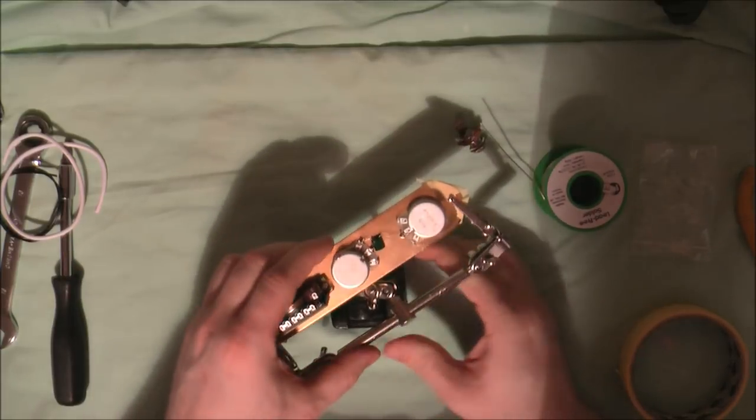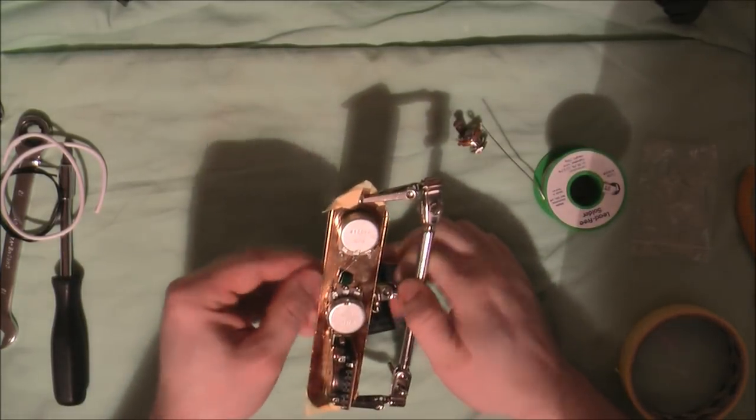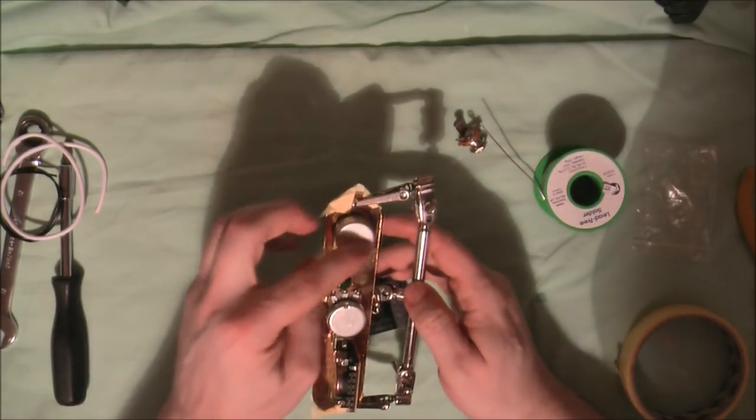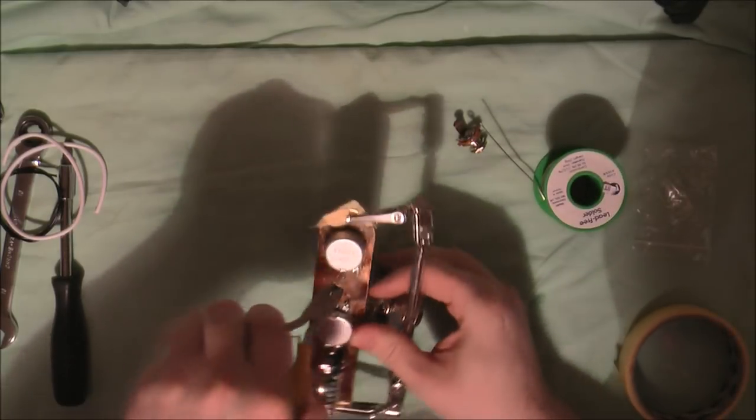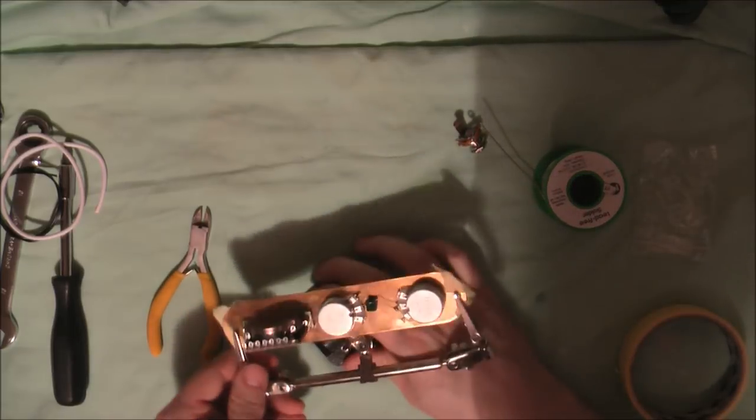Okay so that is now soldered, all three points. Just have to be careful that there's no excess wire sticking out there. The last thing you want to do is for that to touch the tone pot so we're just going to trim that off. Just like so. So that's done.